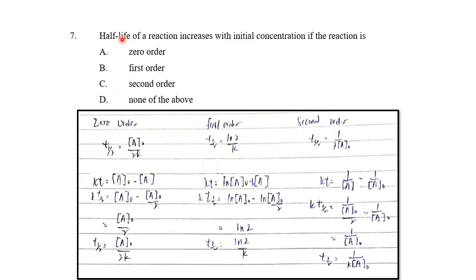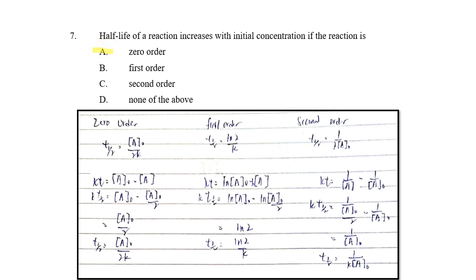Question seven: the half-life of a reaction increases with initial concentration. Checking the half-life formula for each order — zero order half-life is directly proportional to initial concentration, first order half-life is independent of concentration, and second order half-life is inversely proportional to initial concentration. Therefore the answer is A: zero order.